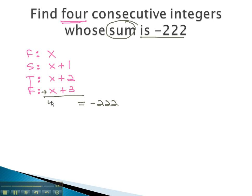Combining like terms gives us 4x plus 6. We can quickly solve this equation by first subtracting 6 from both sides. 4x equals negative 228.